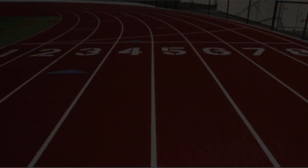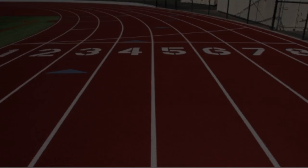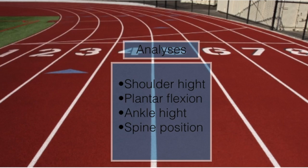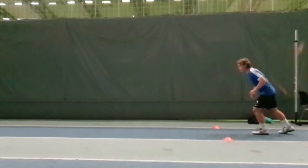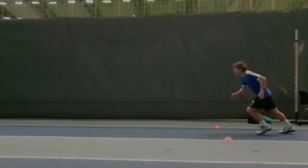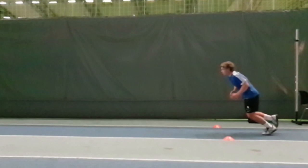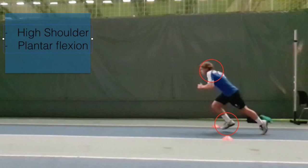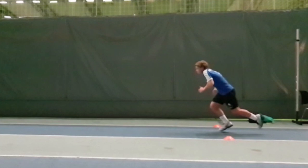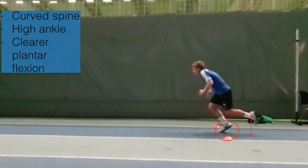For athlete 2, we will be primarily analyzing the shoulder height, plantar flexion, ankle height, and spine position. In still picture 1, the athlete has seemingly high shoulders and slightly plantar flexes his ankle. In still picture 2, the athlete curves his spine and his ankle in the back leg is fairly high. We can also see a more clear plantar flexion and that the athlete does not lift his knee very high. His right foot at contact time is nearly behind his center of mass, resulting in a touchdown distance that is not optimal.